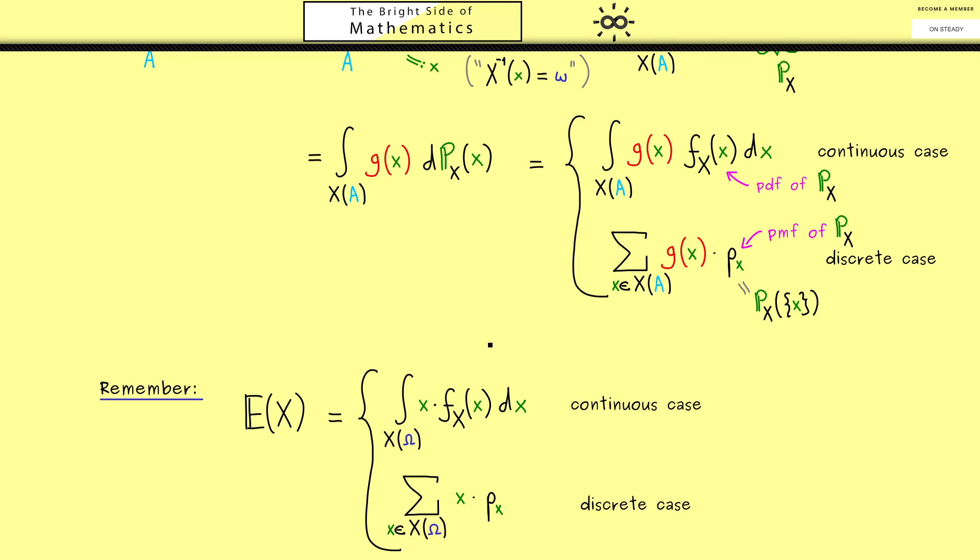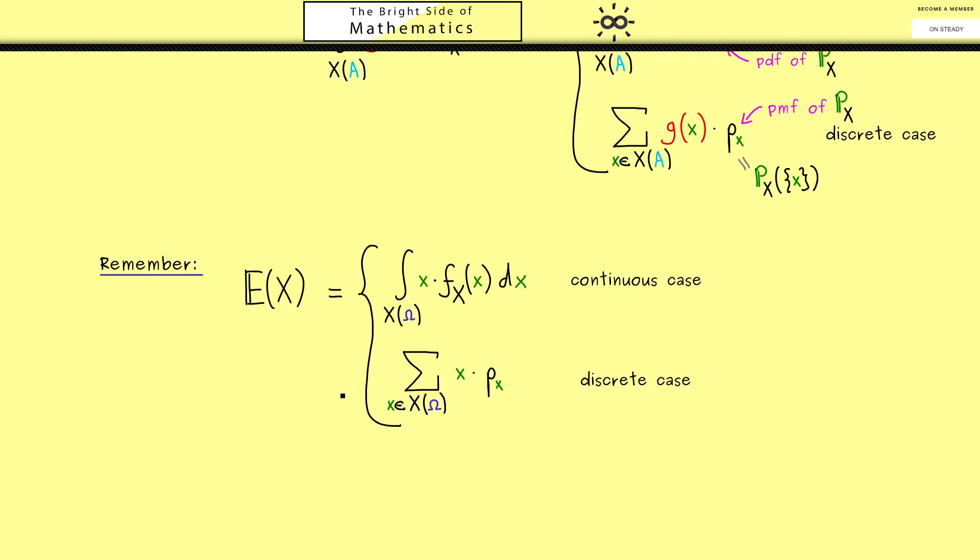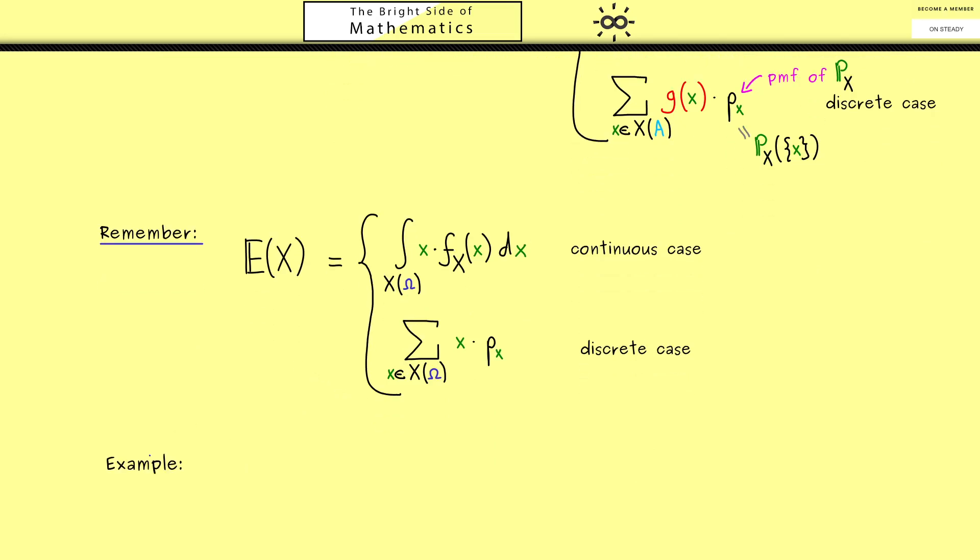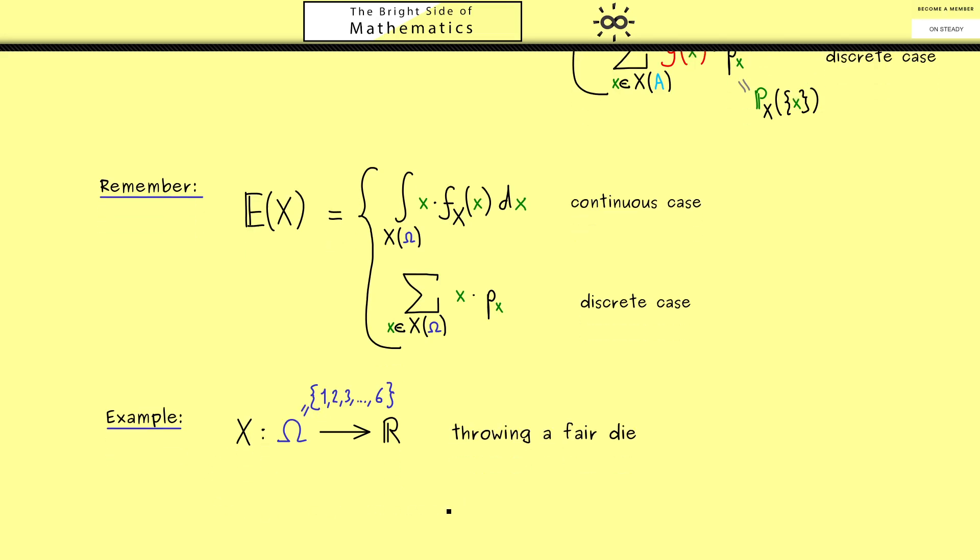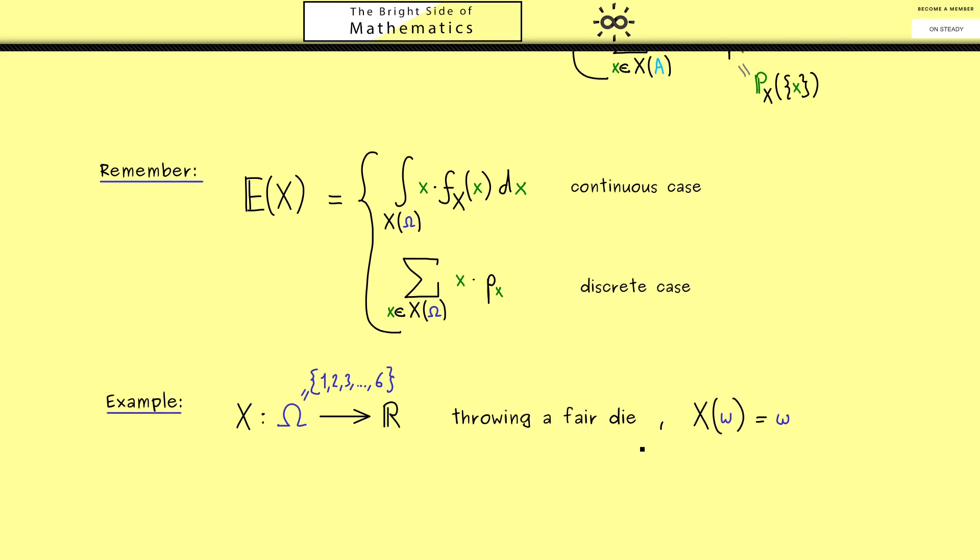To close this video, let's look at a simple example. Let's take again an ordinary die and throw it one time. Hence we have our random variable X from Ω, which is {1,2,3,4,5,6}, into ℝ. Maybe this is not the most exciting example because the random variable is just the identity here. Nevertheless, I think it's a good starting point to get an idea how to calculate the expectation.